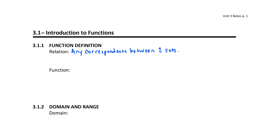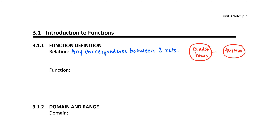tuition that you pay. If we look at the number of credit hours, that's going to be our first set, and it's related to the tuition that you pay per semester. There is a correspondence between those two sets. We would call that a relation.